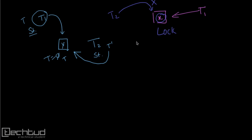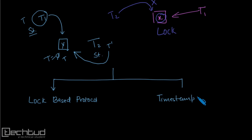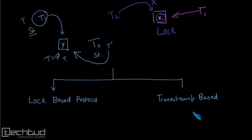That was appearing vague but we will learn all the types of concurrency control protocol in detail. Basically we have two kinds of concurrency control protocol. The first one is the lock-based protocol and another one is the timestamp-based protocol. In lock-based protocol we apply a lock on a particular data item when some transaction accesses it, and when the transaction is finished we unlock the data so another transaction can access it. In timestamp-based protocol we do some time comparison.